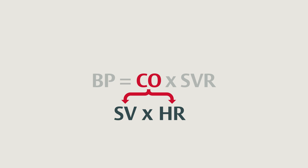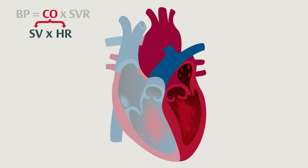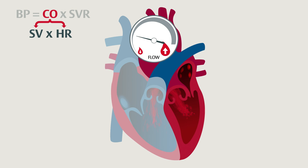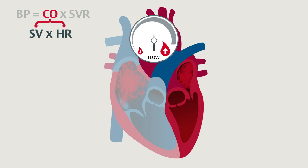Now let's look at the determinants of cardiac output. Here's a simplified diagram of the left ventricle — let's measure the flow coming out of it. The heart beats a certain number of times per minute, and each beat ejects a volume of blood called the stroke volume. The product of stroke volume and heart rate gives us the volume pumped per minute, or the cardiac output.